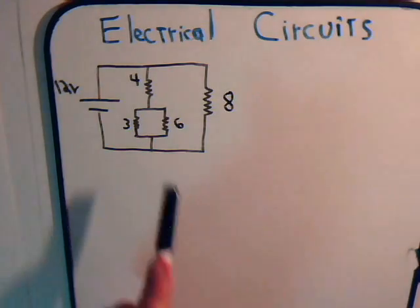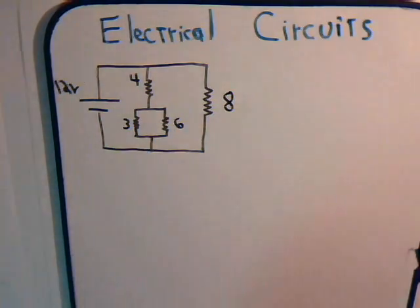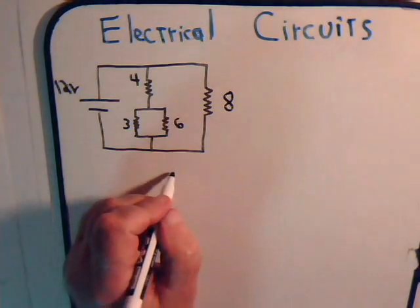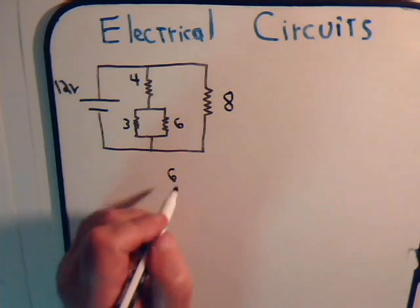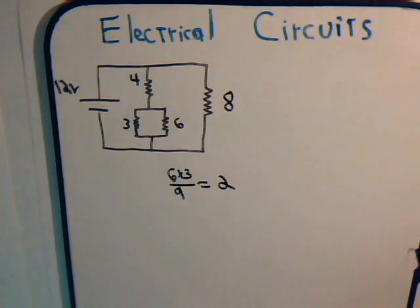First, let's replace these with their equivalent resistance. Two resistors in parallel - that's equal to their product divided by their sum. So that's equal to 2 ohms.